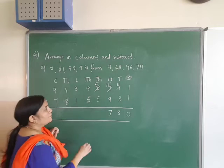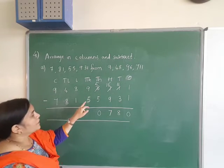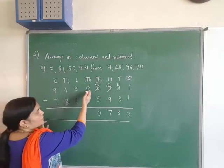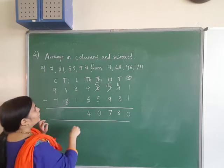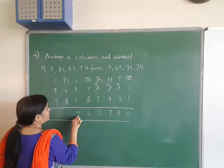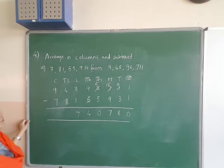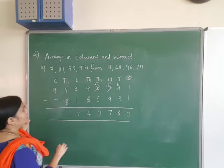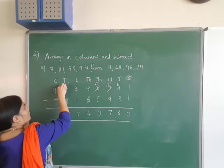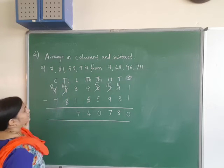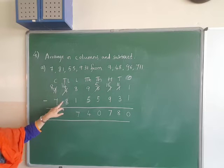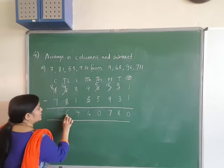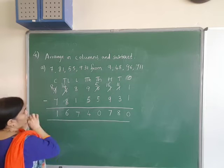5 minus 5 is 0. 9 minus 5 — since this is a bigger number with no carry over needed — 9 minus 5 is 4. Then 8 minus 1 is 7. 4 minus 8 — we cannot do. So this will become 14, this will become 8. 14 minus 8 is 6. And 8 minus 7 is 1.